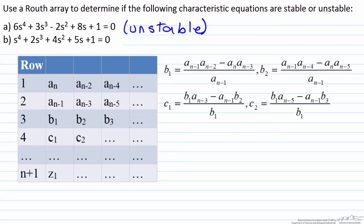For part b we see that they are all positive, so therefore it passes the first test of a Routh array. Now it has to pass the second test where the first column is all positive.